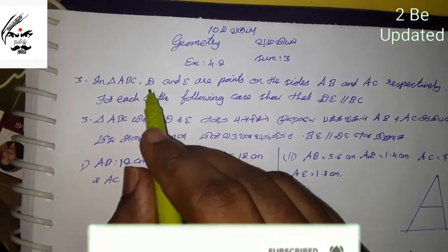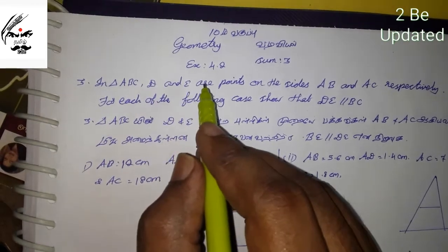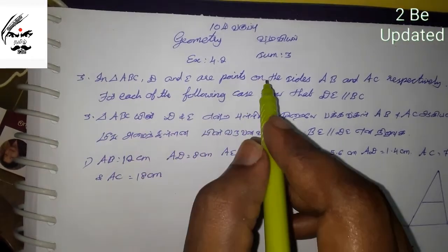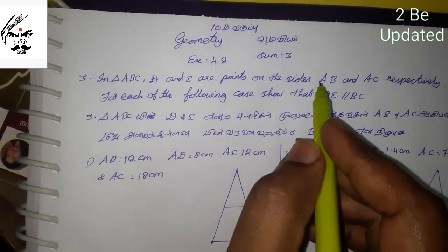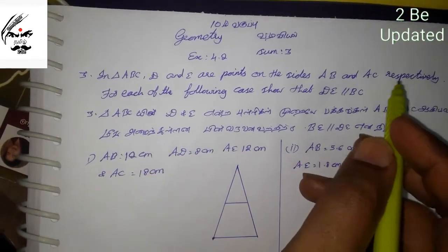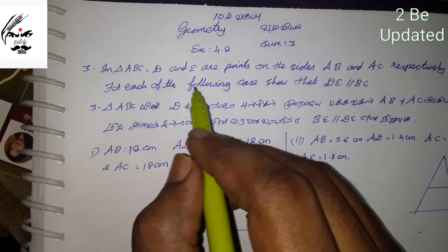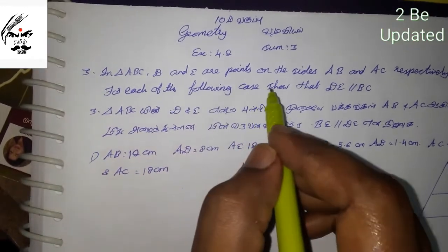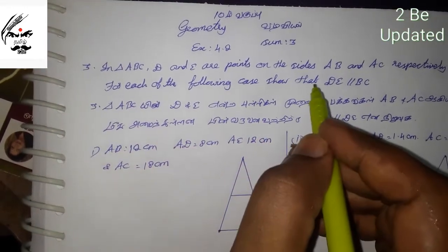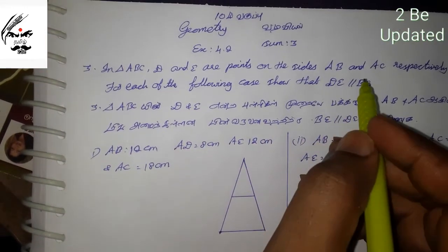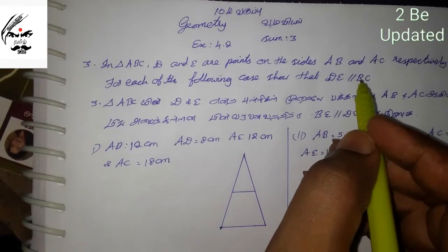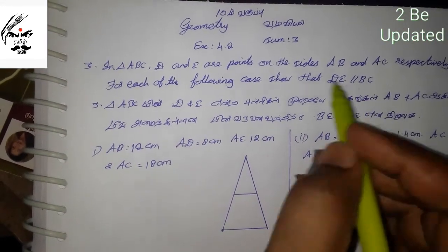In triangle ABC, D and E are points on the sides AB and AC respectively. For each of the following cases, show that DE is parallel to BC.